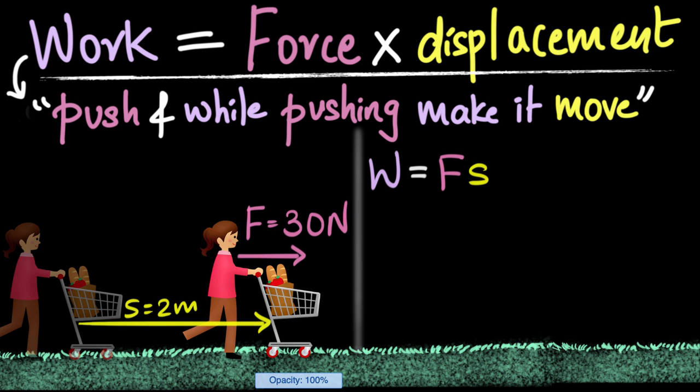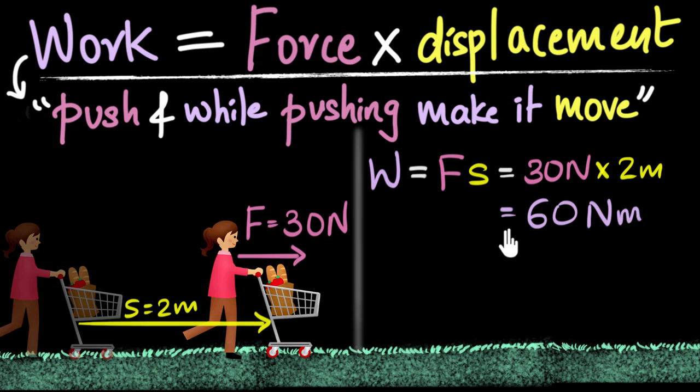Okay, work done is force times the displacement, right? So in our case, the work done will equal to force, which is 30 newtons times the displacement, which is two meters. So that gives us 30 times 2 is 60. And now let's look at the units of this. The units become newton into meter. So the units of work done becomes newton meters.